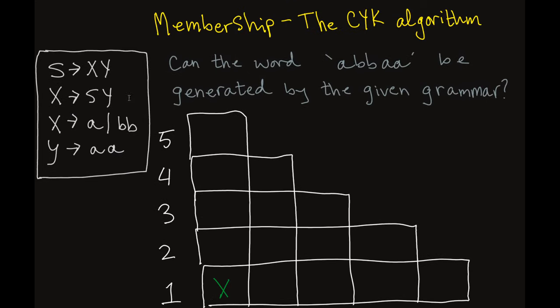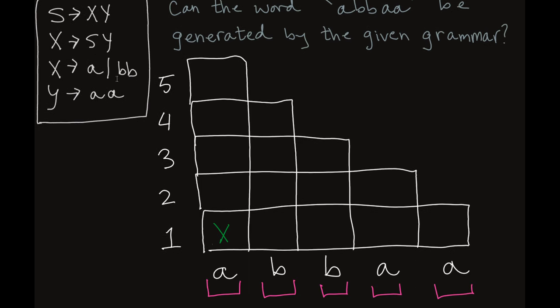The next one is B. Is there any non-terminal that can produce the terminal B? The answer is no. We have one that can produce two Bs, but that doesn't work here. So we mark those positions with dashes.